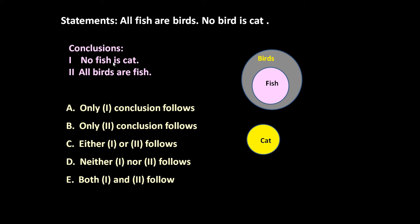So now based on this, we have to draw a conclusion. No fish is cat - yes, because no other Venn diagram may be possible in this case. All fish are birds, no bird is cat, so there is no relationship between bird and cat, and fish and cat.